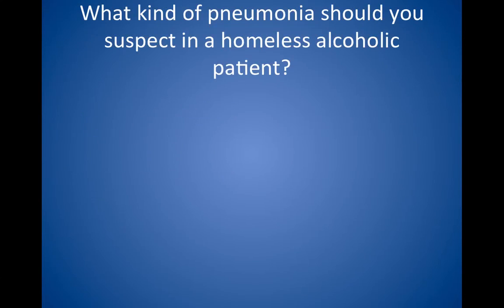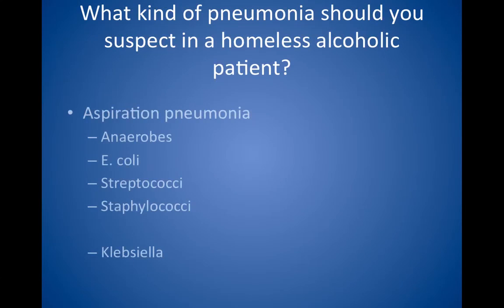What kind of pneumonia should you suspect in a homeless alcoholic patient? Aspiration pneumonia. Look for enteric organisms such as anaerobes, E. coli, streptococci, and staphylococci as the cause. Think of Klebsiella species if the sputum resembles currant jelly or if thick mucoid capsules are mentioned in culture reports.